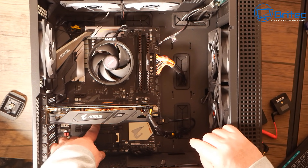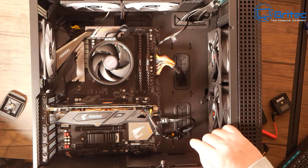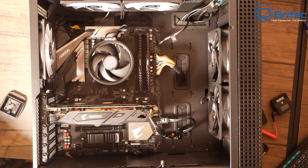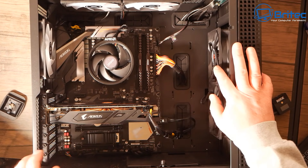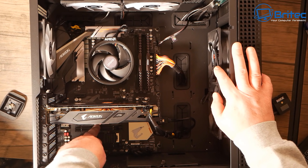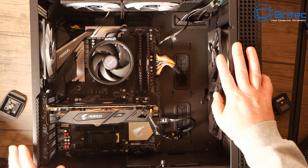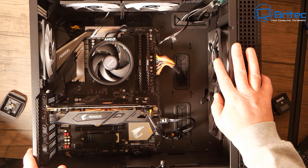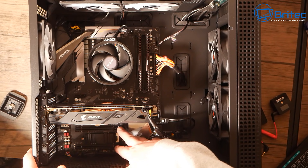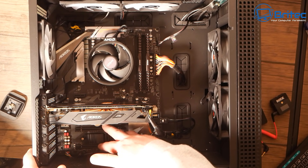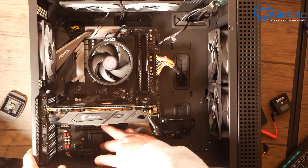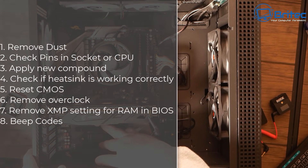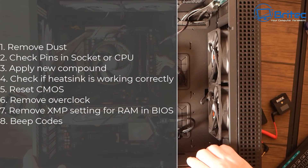If you're getting a black screen, reset the CMOS by pulling out the battery and the power cable, then press the power button to clear any stored information. Put the CMOS battery back in. If it's an older computer, you may want to replace the CMOS battery as it could be failing — you can buy a new one cheaply. There may also be a jumper on the board to clear the CMOS, which will allow you to reboot the PC properly.